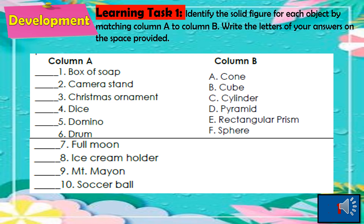Let us now answer Learning Task 1. Box of soap — E, rectangular prism. Camera stand — D, pyramid. Christmas ornament — F, sphere. Dice — B, cube. Domino — E, rectangular prism. Drum — C, cylinder. Full moon — F, sphere. Ice cream holder — A, cone. Mount Mayon — A, cone. Soccer ball — F, sphere.